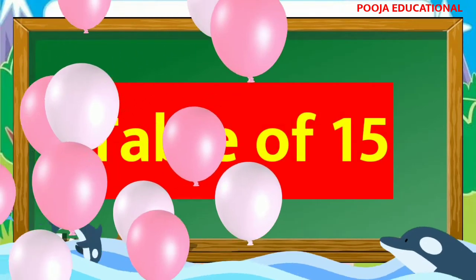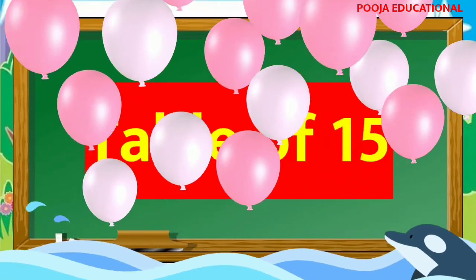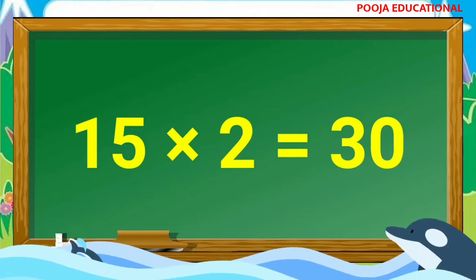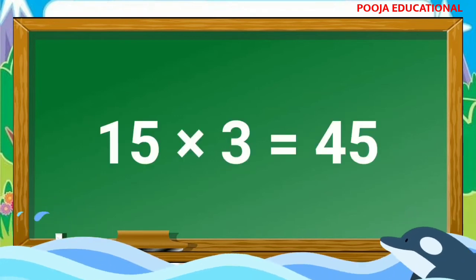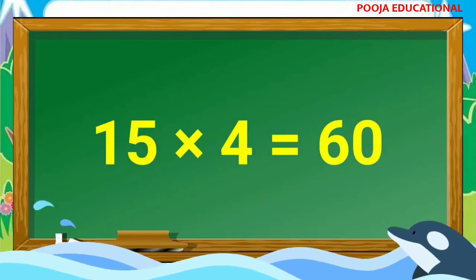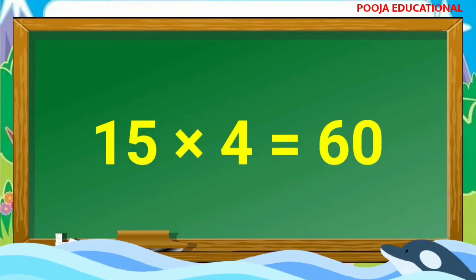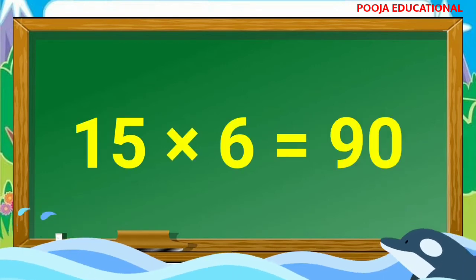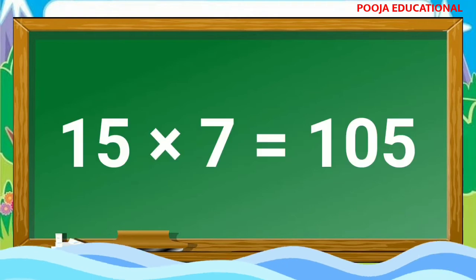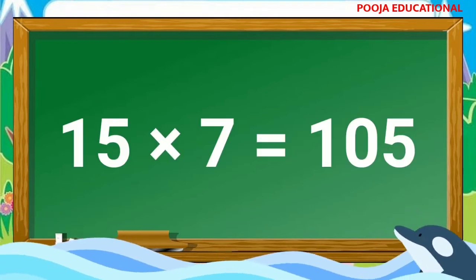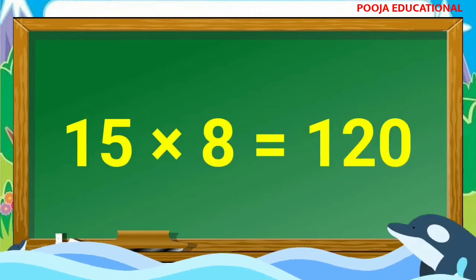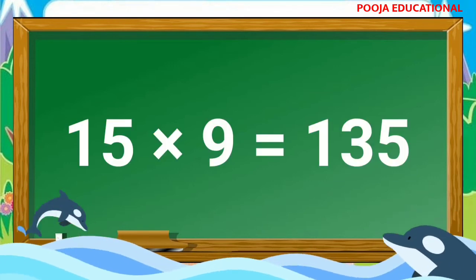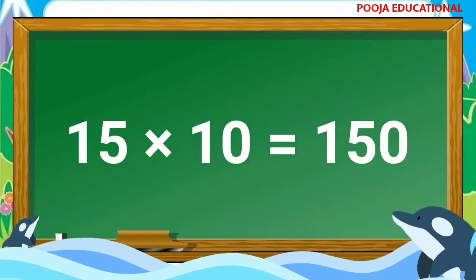Table of 15: 15×1=15, 15×2=30, 15×3=45, 15×4=60, 15×5=75, 15×6=90, 15×7=105, 15×8=120, 15×9=135, 15×10=150.